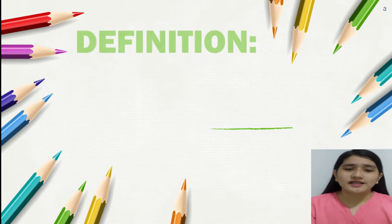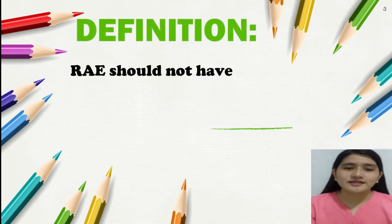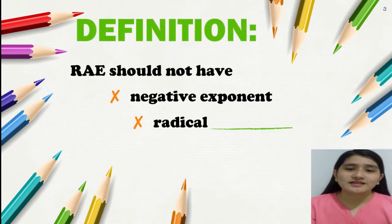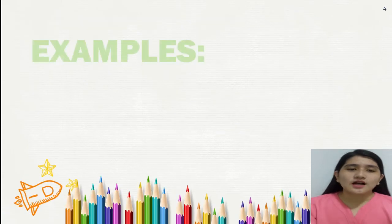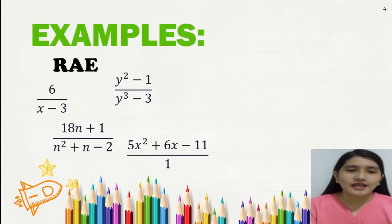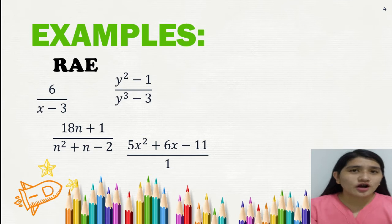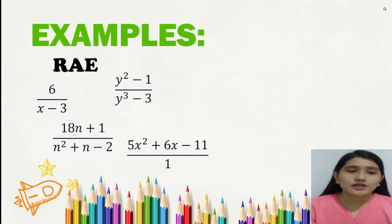RAE should not have negative exponents and radicals. So if the given expression has negative exponents and radicals, it is considered not a Rational Algebraic Expression. These are examples of RAE. As you can see, each expression is composed of numerical coefficients — the number beside the variable — and constants. They don't have radicals and negative exponents.